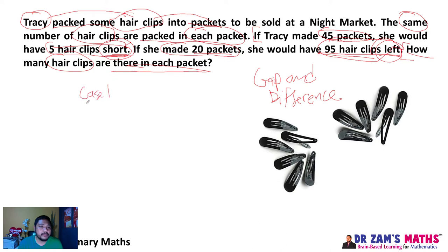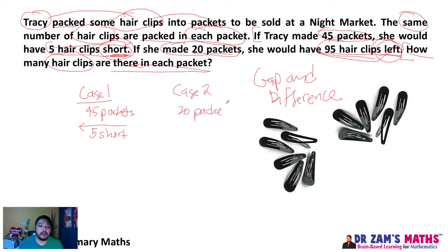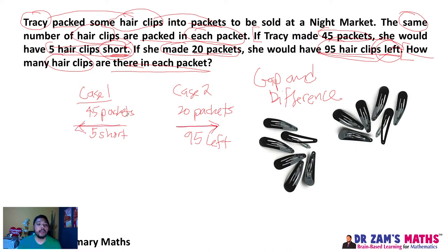Let's look at the two cases. In Case 1, Tracy made 45 packets and she had 5 short — she needs 5 more. In Case 2, she made 20 packets and she had 95 left, meaning extra. These two cases are in opposite directions, and this concept of opposite direction is very important in the Gap and Difference method.